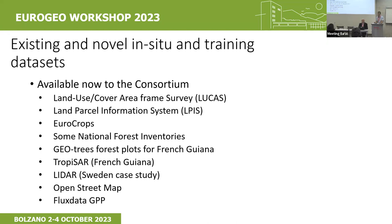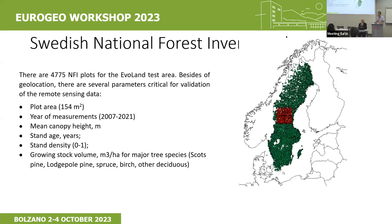In EvoLand we make use of well-known European datasets such as LUCAS, LPIs, and EuroCrops — which is really useful with 16 countries on crop information. National forest inventory data is critical but not yet available in many countries — there is a real need for access and opening up of that data. There is also the GeoTrees project, which provides freely available open biomass data preparing for the new biomass sensor. We also use LIDAR data for Sweden, OpenStreetMap, Fluxnet flux data, and GPP data. Sweden is at the forefront of opening up national forest inventory data, setting a precedent for all of Europe — because we can't really do good biomass maps without good reference, training, and validation data.